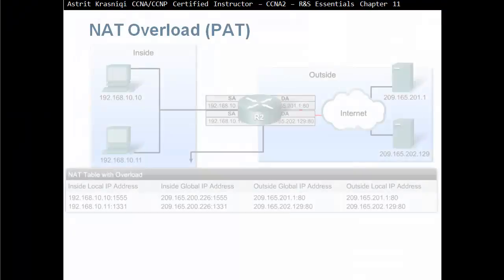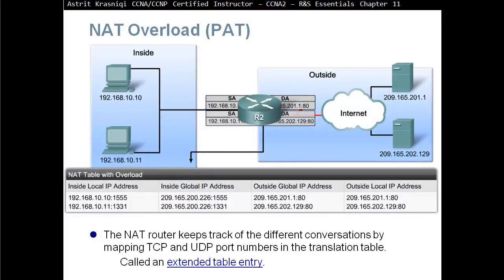NAT overload, or PAT, keeps track of different conversations by mapping TCP and UDP port numbers in the translation table — this is called an extended table entry. For example, a local address 192.168.10.10 is translated to a global address, and PC .11.11 translates to the same global address — which is not possible with static or dynamic NAT. With PAT, since we translate both the IP address and the port numbers, multiple devices can share one public IP.